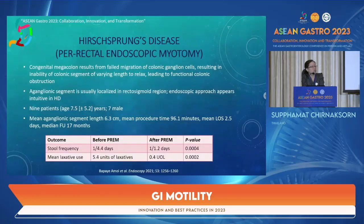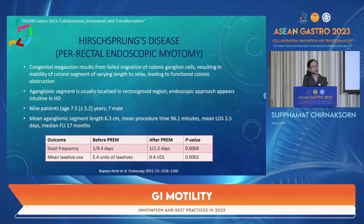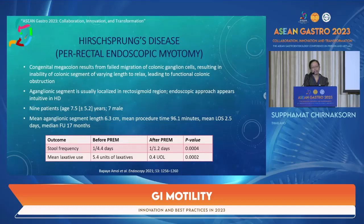Hirschsprung's disease is a congenital megacolon resulting from failed migration of colonic ganglion cells, leading to functional colonic obstruction. The aganglionic segment is usually localized in the rectosigmoid region. Rectal endoscopic myotomy appears to be an effective treatment. Retrospective data on nine patients with mean age around 70 years showed a mean aganglionic segment length of approximately 6 cm, procedure time of about 1.5 hours, mean hospital stay of 3 days, and median follow-up of 17 months, with improved stool frequency and reduced laxative use.